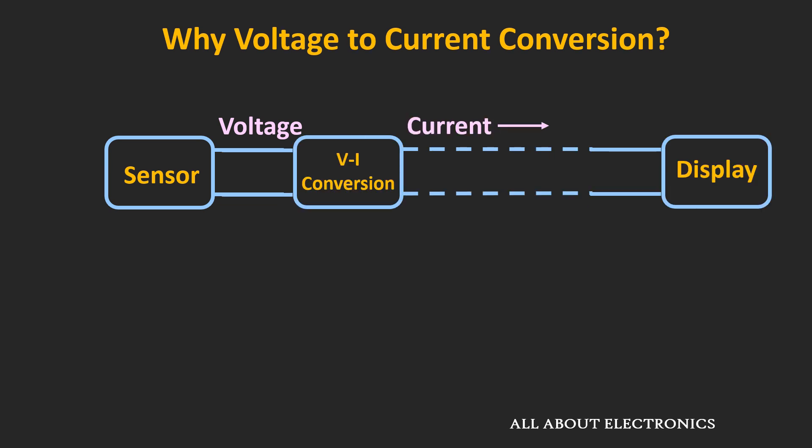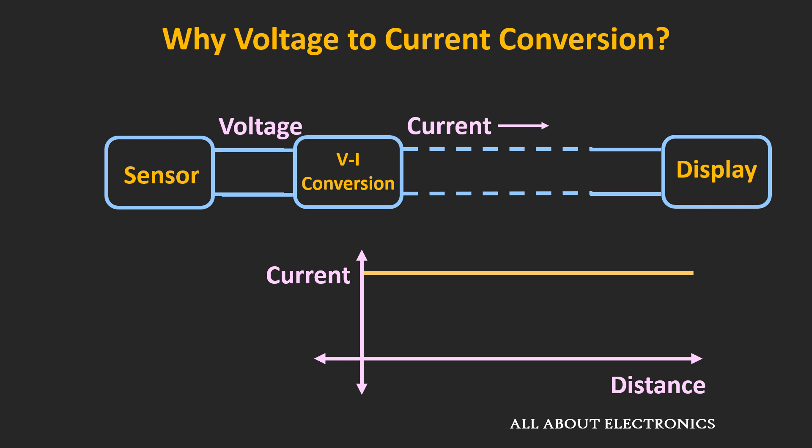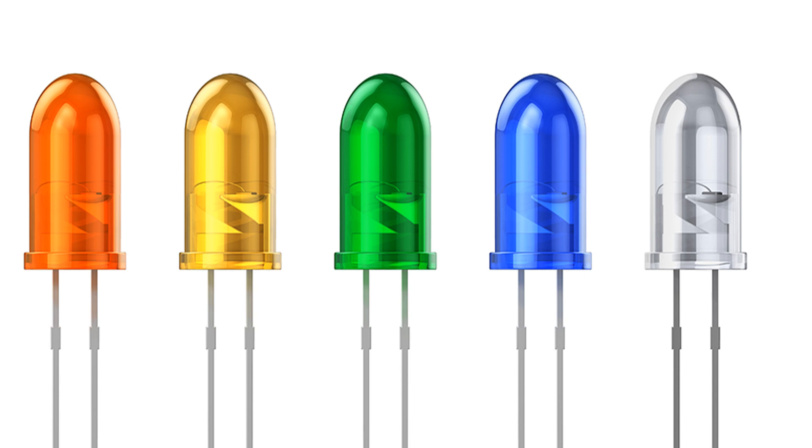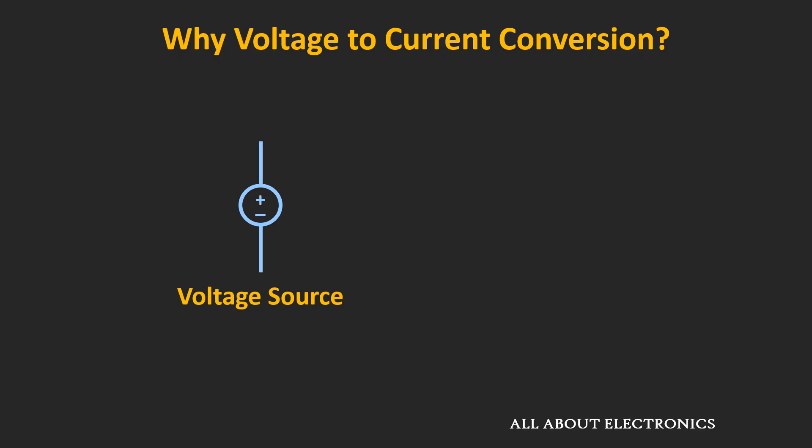Now suppose if we convert this voltage into current, then this current will remain constant throughout the length of the cable. Moreover, this current is less prone to external noise. So this is the basic advantage of converting the voltage into current in industrial applications, particularly when the two locations are quite far away from each other. Apart from that, in lab experiments also, for testing different circuit components as well as driving LEDs, this voltage to current converter circuit is useful. In such applications, you need to convert this voltage source into a current source — basically, we require a voltage controlled current source, so that just by changing the voltage, we should be able to control the current.